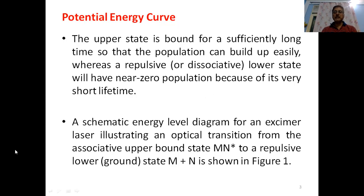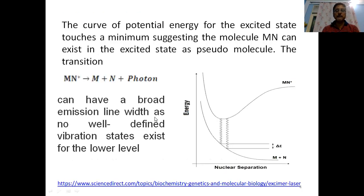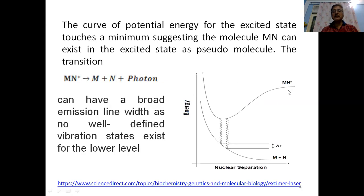Let us consider a potential energy curve to understand the laser. If M and N, two dissimilar molecules or atoms, come together to make a pseudo-molecule in the excited state, MN*, then the potential energy of this MN* will form an excited state curve and a ground state curve. In the excited state they come together; in the ground state they are highly repulsive to each other, so they enter the dissociative state.